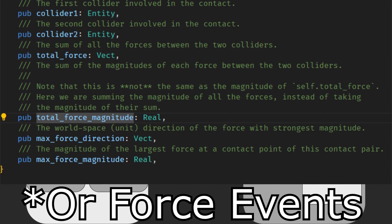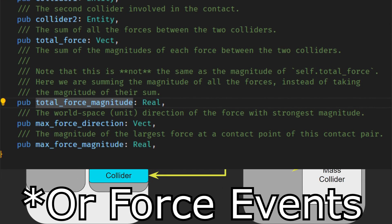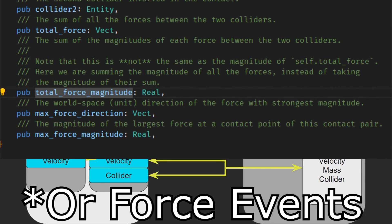If you need more information about a collision, such as collision force and stuff like that, you need to use the Bevy Rapier context in order to extract that information.